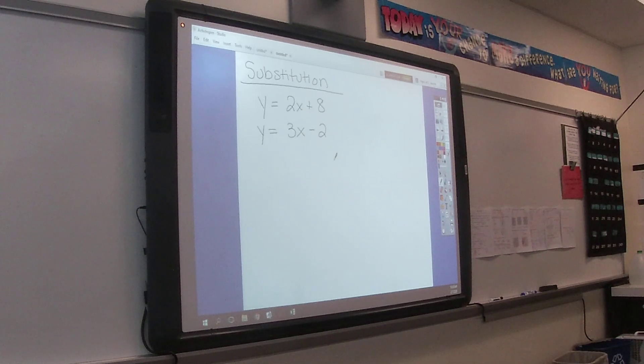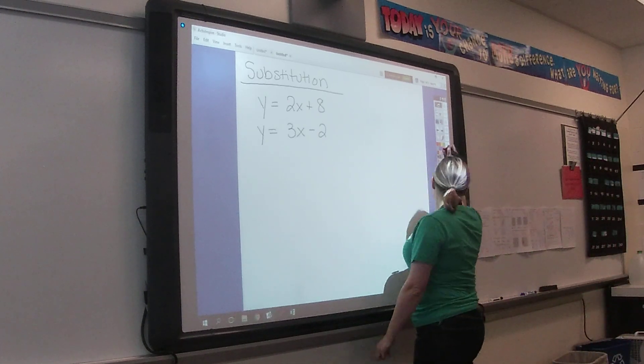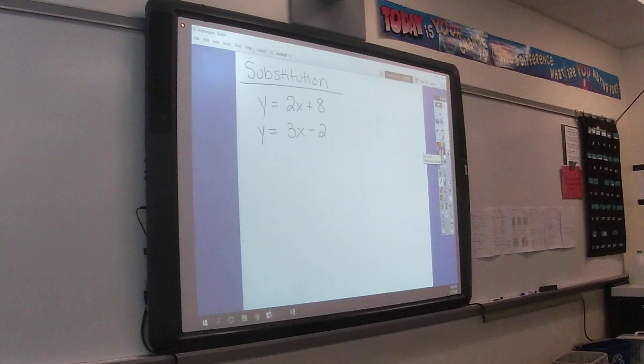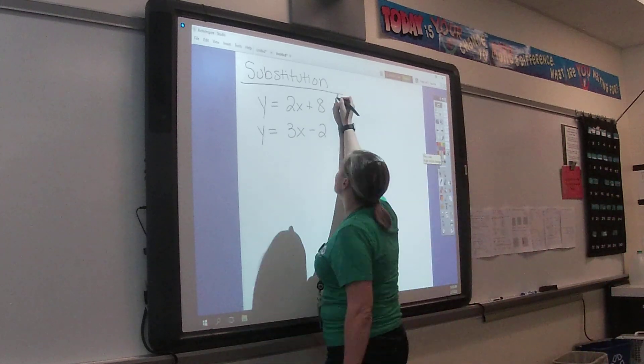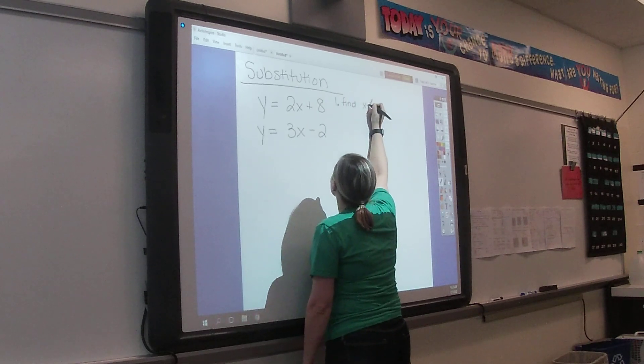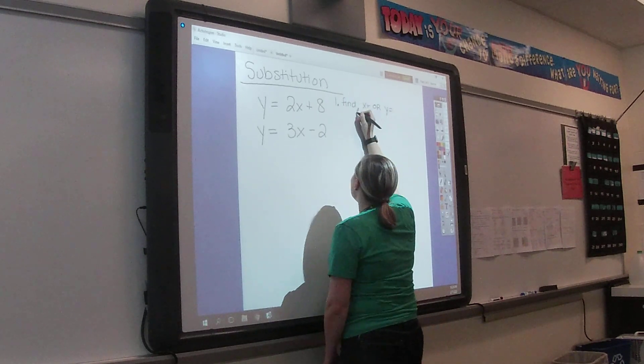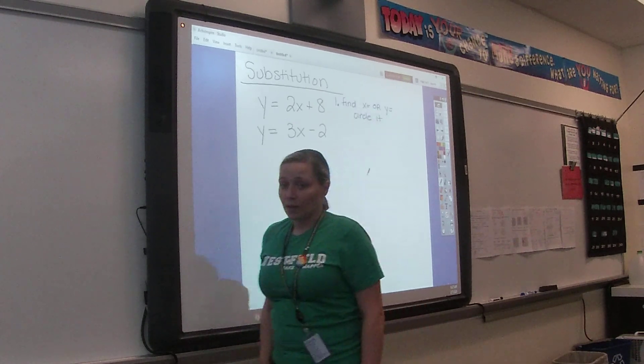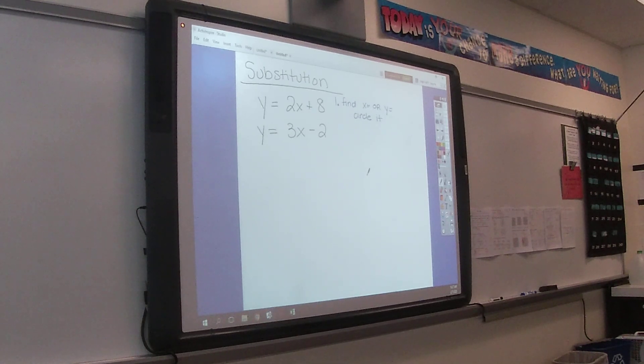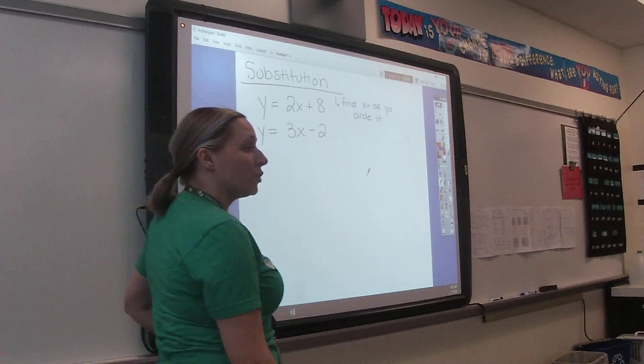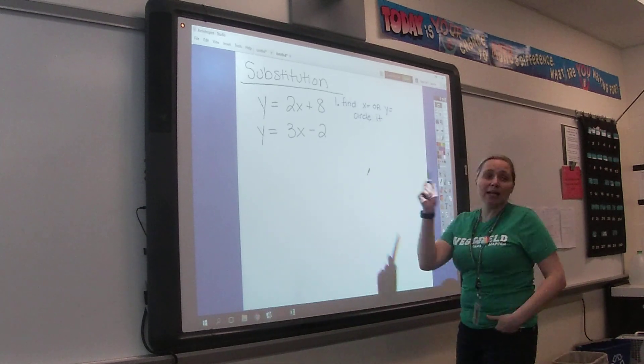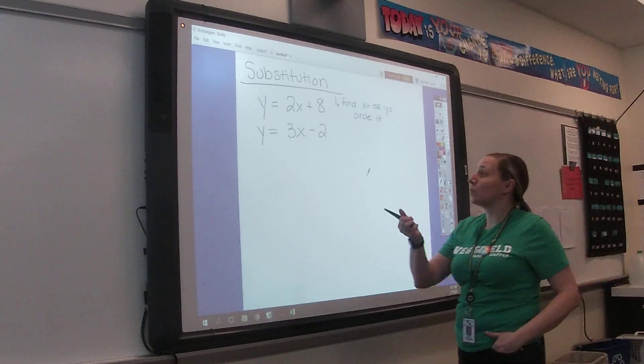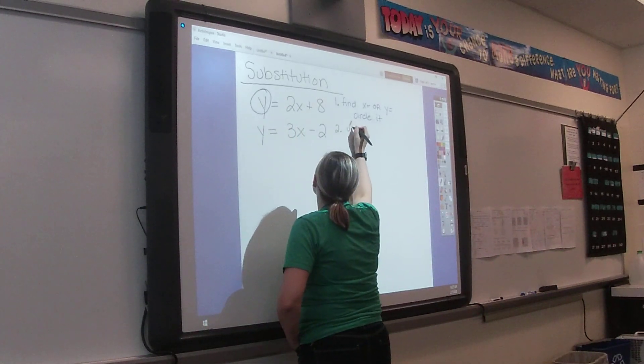So Y equals 2X plus 8. Substitution is where we said we wanted to find either X equals or Y equals, and then we would circle it. So where up here do we see an X equals or a Y equals? Both of them. So we're going to pick one.